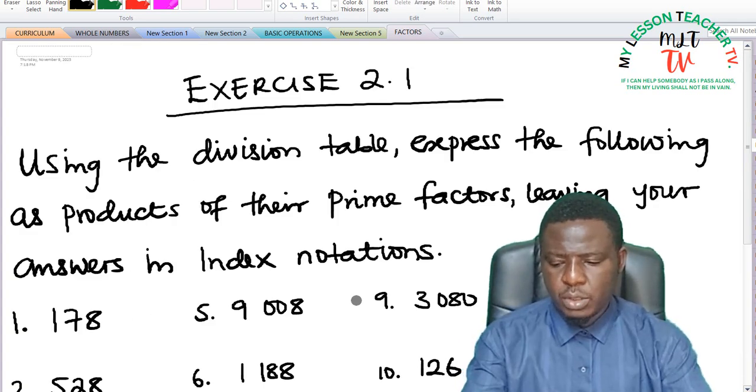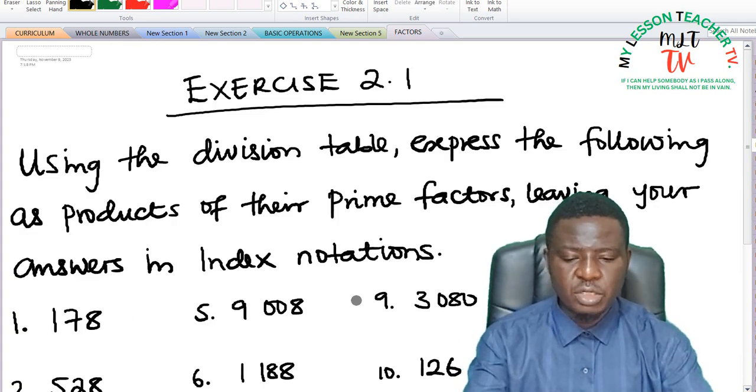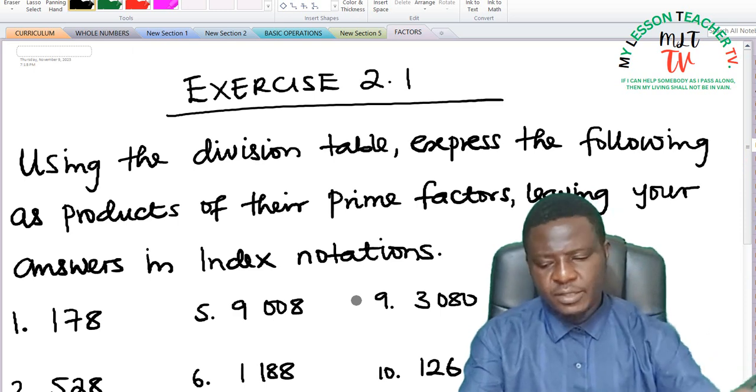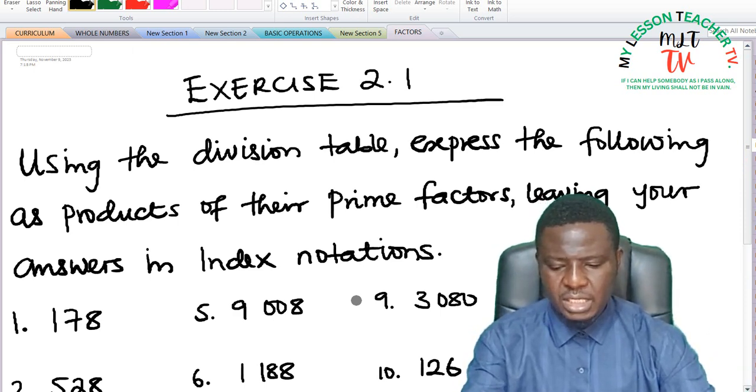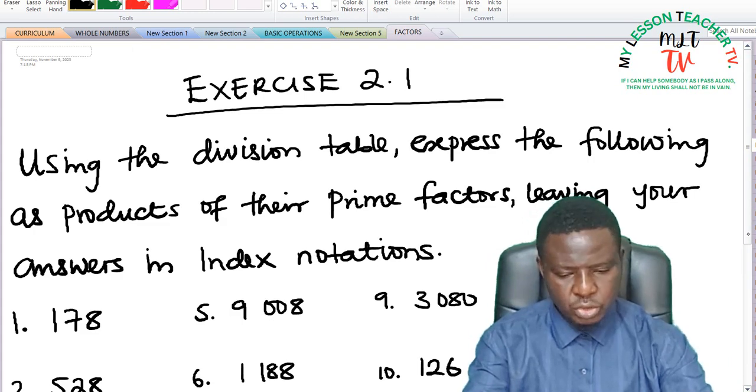In exercise 2.1, the question says, using the division table, express the following as products of their prime factors, leaving your answers in index notations.